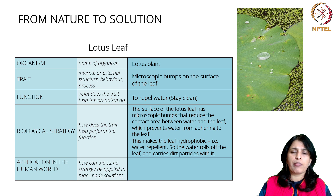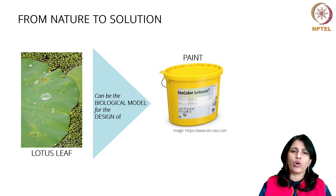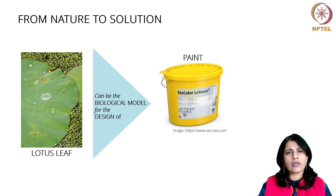Then you ask yourself: is there an application in the human world? The application is paints — specifically, paints for the exteriors of buildings. A company called Lotusan Paints has done exactly that. So a summary of the nature to solution approach is that a lotus leaf can be the biological model for the design of paints.